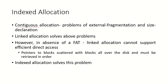In contiguous allocation there were problems of external fragmentation and of size declaration. Linked allocation solved these problems, but with the use of a FAT or file allocation table. In absence of a file allocation table, linked allocation cannot support efficient direct access — it can only support sequential access, because the pointers to the blocks are scattered all over the disk and must be retrieved block by block in sequential manner. Indexed allocation solves this random access problem as well.